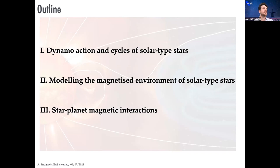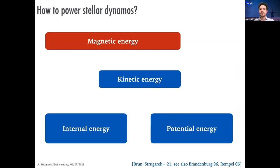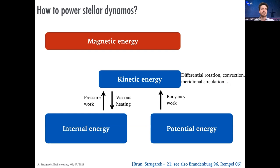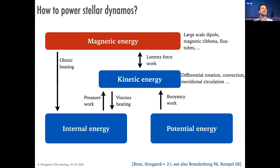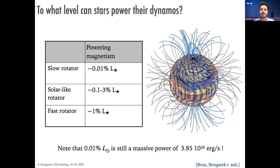I want to dive into dynamo action and cycles in solar-type stars. Inside a star you have two main sources of internal and potential energy, but you cannot transfer any of this directly into magnetic energy. You have to go through kinetic energy — through the work of buoyancy force or pressure force — triggering motions such as differential rotation, meridional circulation, and convection. Through the work of the Lorentz force, magnetic energy is created, producing structures such as the large-scale dipole, magnetic flux tubes, etc. Part of this energy can also dissipate back into internal energy through Ohmic heating.